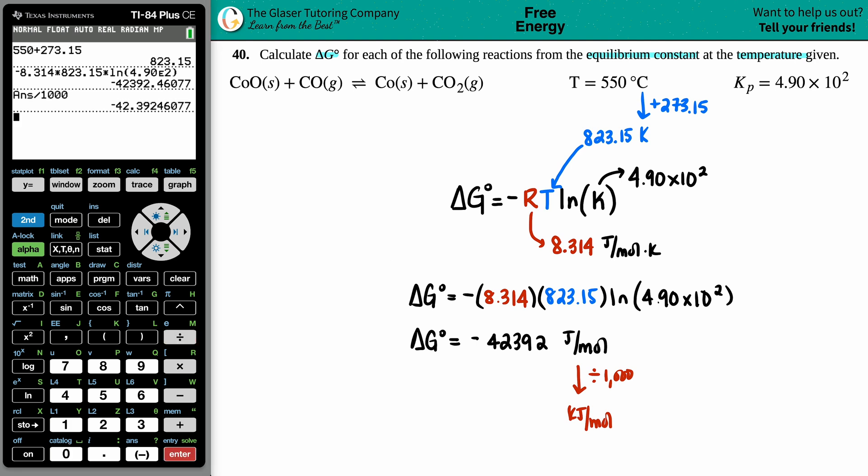Now we have the kilojoule answer and we're going to use the correct number of sig figs. A lot of sig figs in my kelvin but only three in my equilibrium constant, so I'm just going to use three sig figs. It'd be negative 42.4 kilojoules per mole.